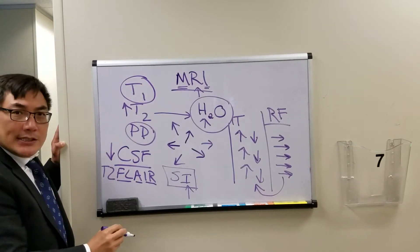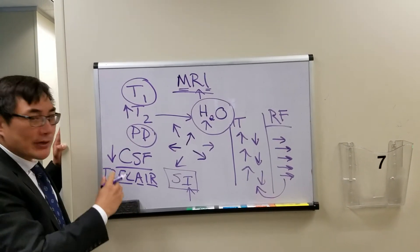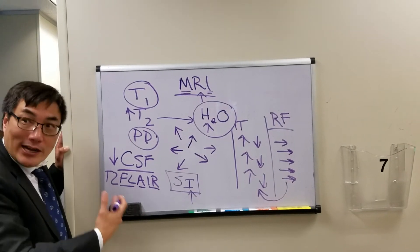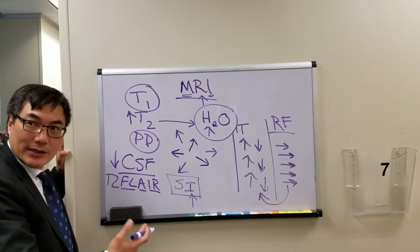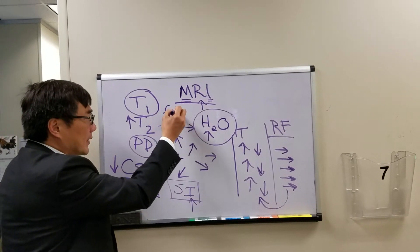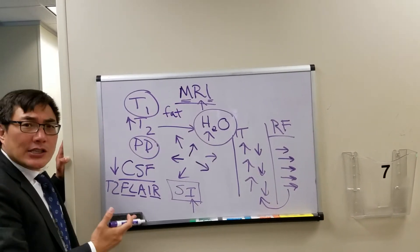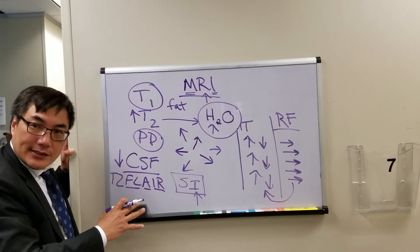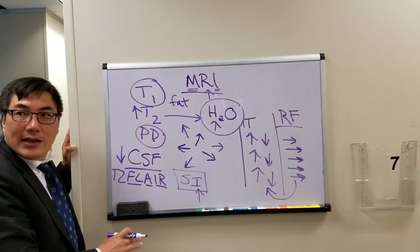T1, in contrast to T2, is the anatomy study. And the reason it's the anatomy study is there are some things that are just naturally bright, hyper-intense on T1, like fat. And it provides us very good differentiation in signal intensity without giving any contrast material.